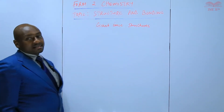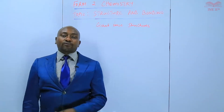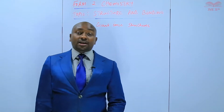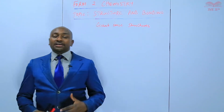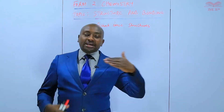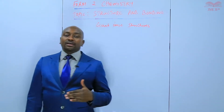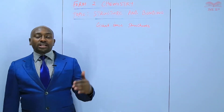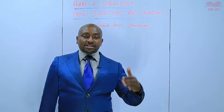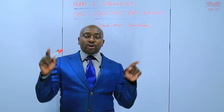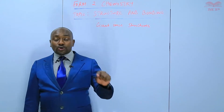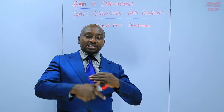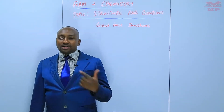Ionic structures are structures that are formed by ionic compounds. They are structures formed by ionic compounds once they are repeated several times in a regular pattern. For example, sodium chloride, if it is repeated several times, it forms an ionic structure because sodium chloride is an ionic compound. So an ionic compound repeated several times forms an ionic structure.